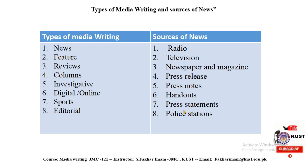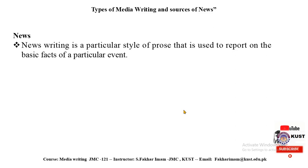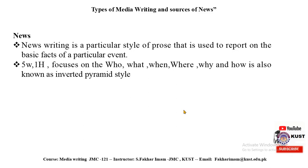The first type is News. News writing is a particular style of prose used to report on the basic facts of a particular event, whether for newspaper publication or broadcasting — electronic media like TV or radio. It answers the five W's in the first few sentences. This structure, focusing on who, what, when, where, why and how, is known as the inverted pyramid style, as discussed in previous classes. News writing is both precise and direct.